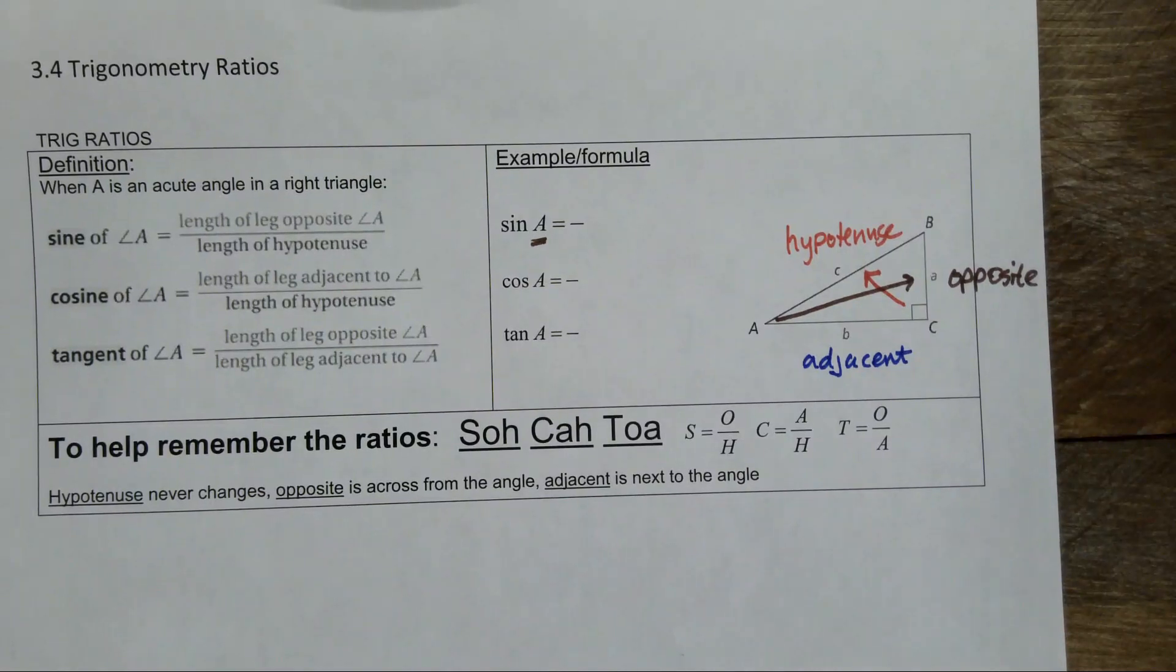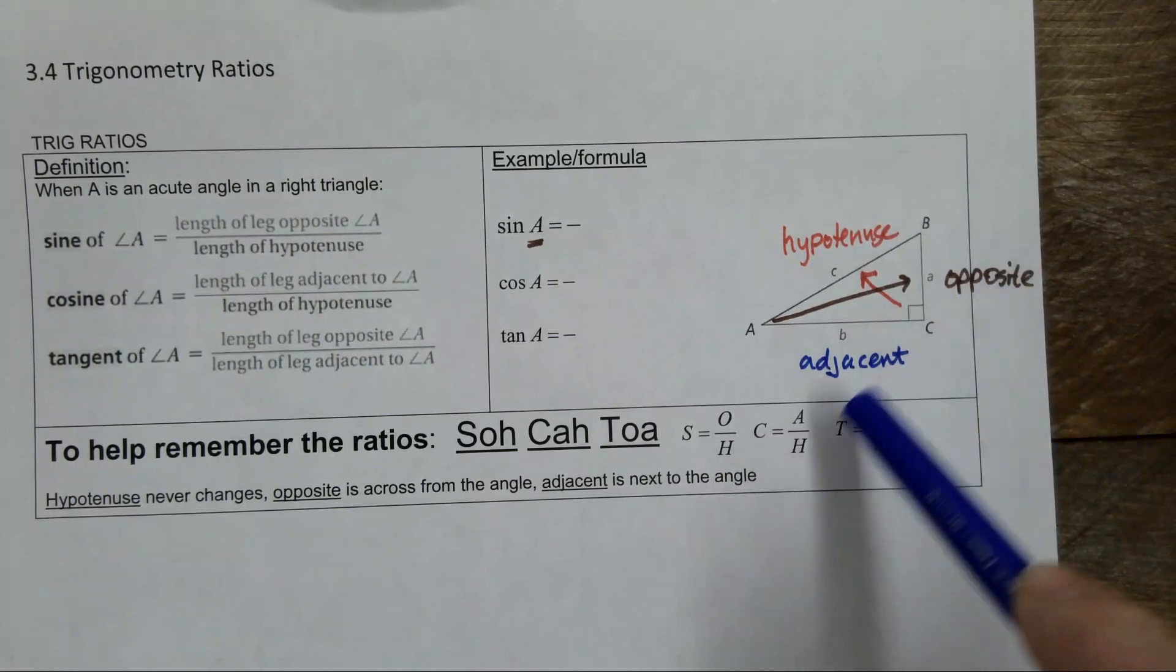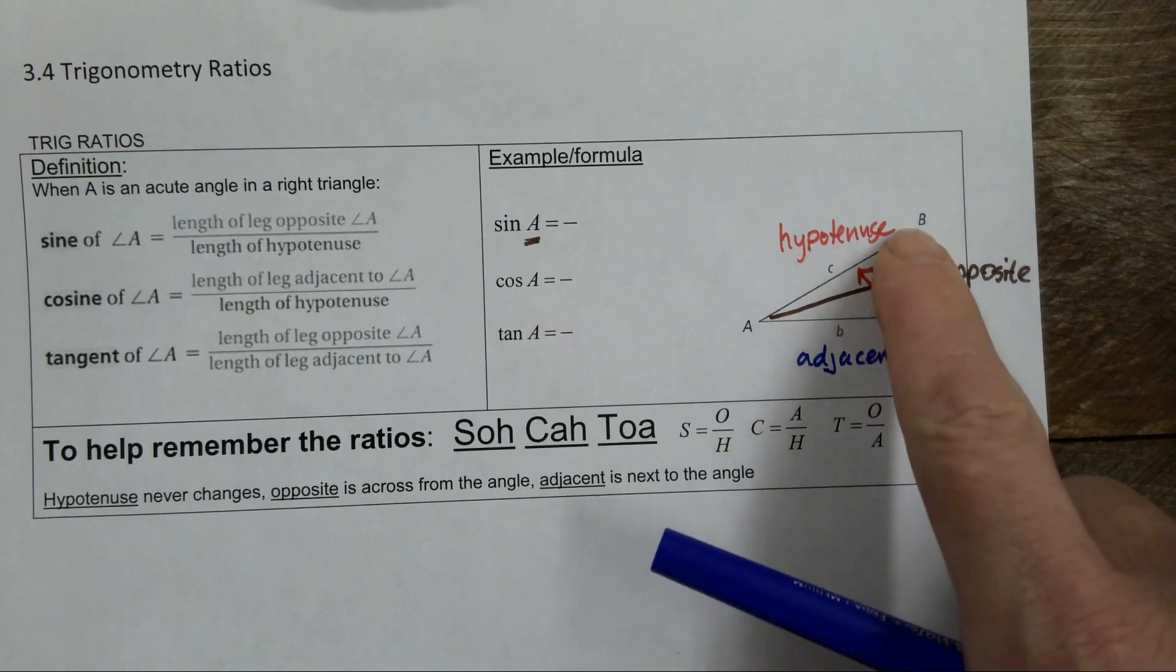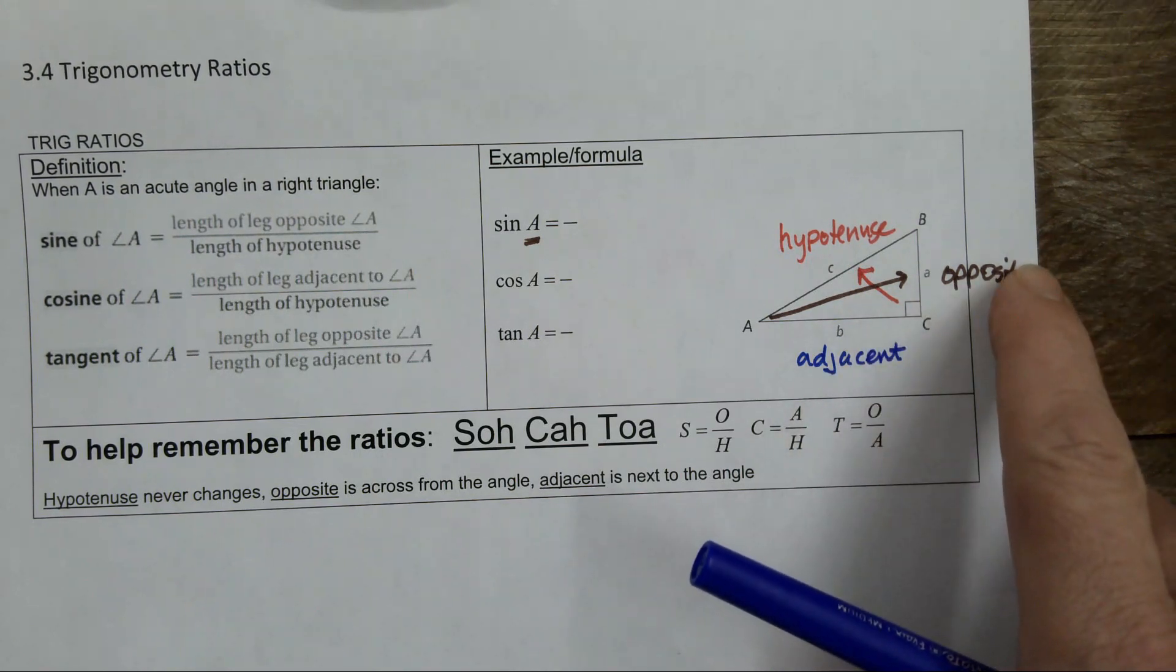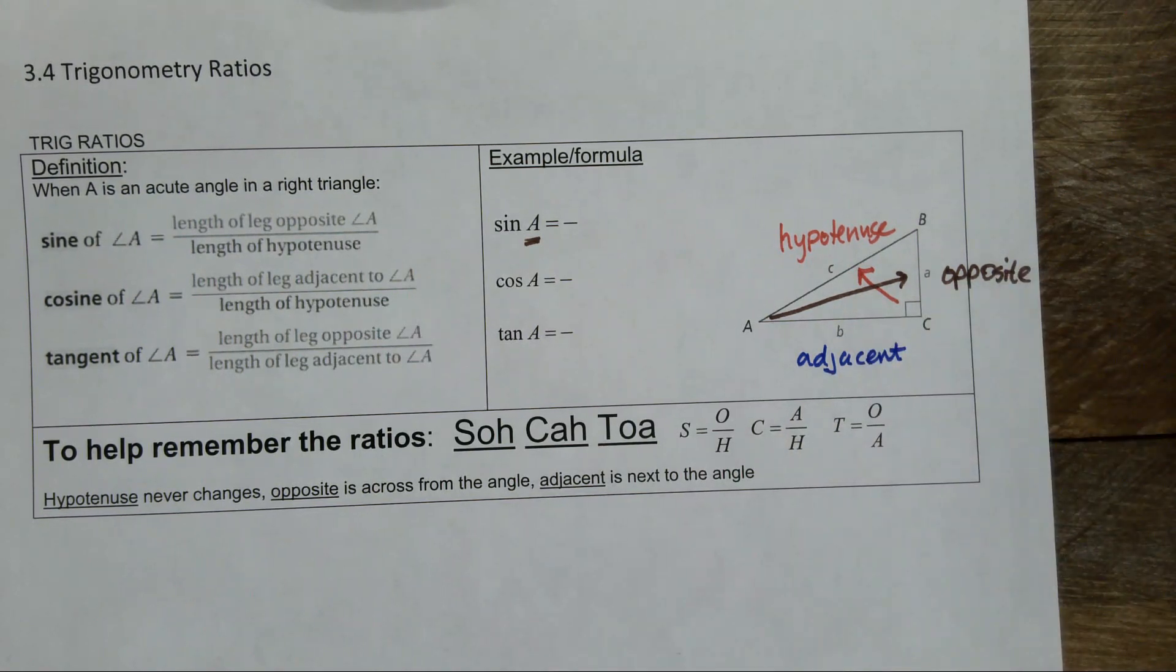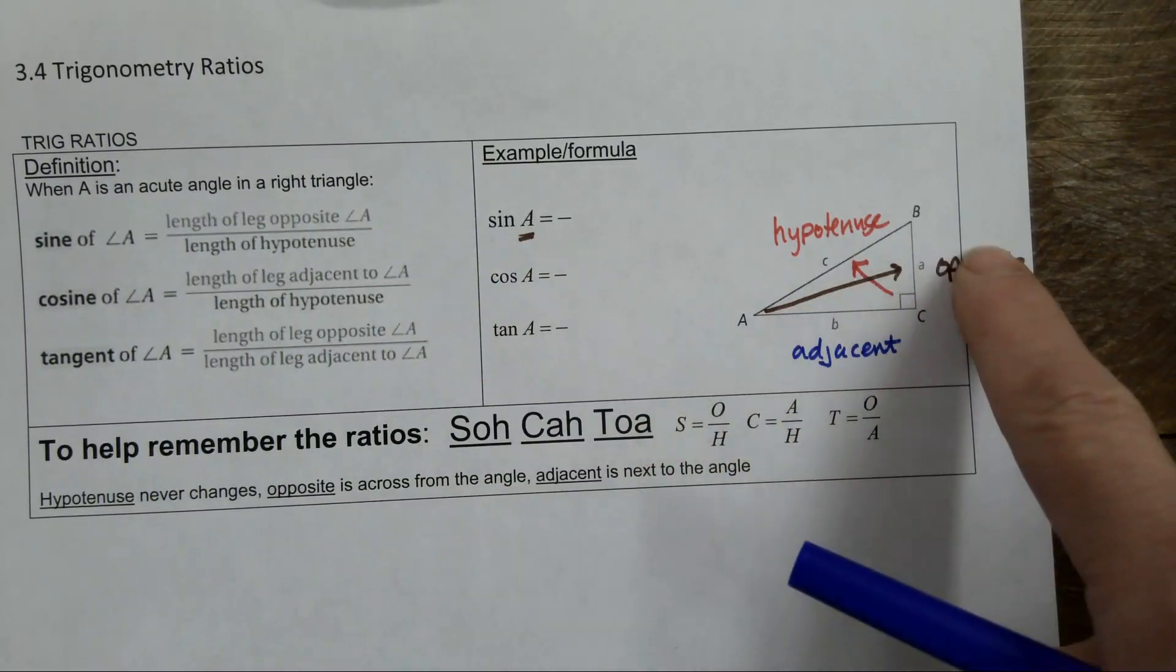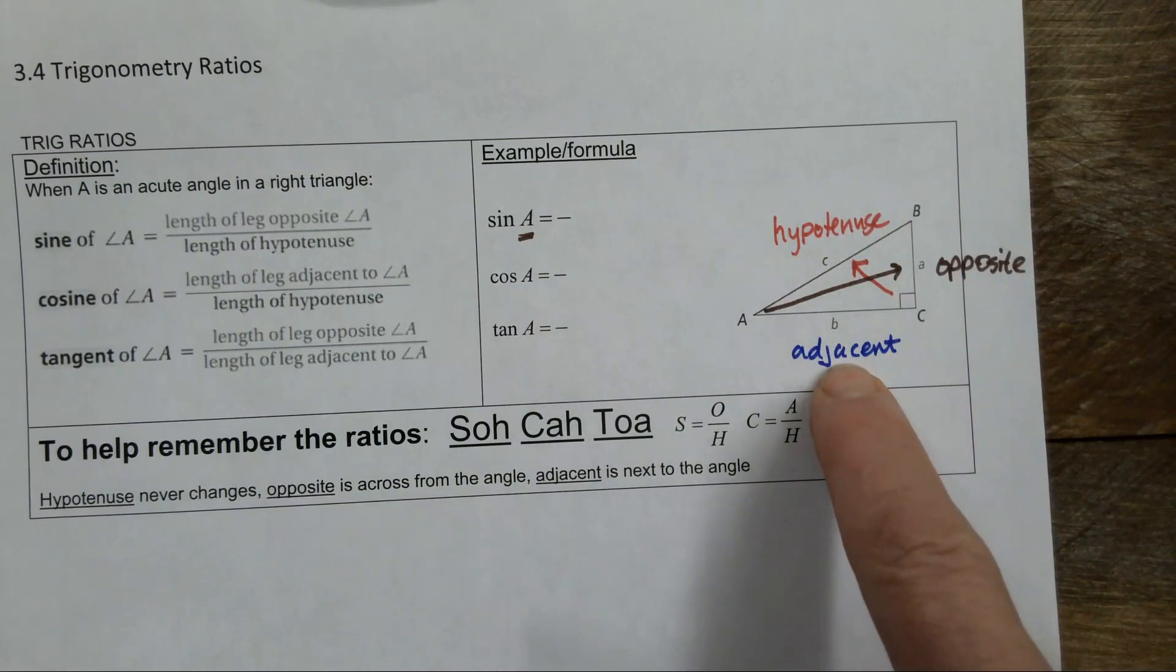Whatever's left is the adjacent. But what you have to remember is the adjacent and opposite can flip-flop depending on the angle. If I was interested in the sine of B, then B would be the opposite side and A would be the adjacent. You have to be aware of the angle that you're looking at. Opposite of A, hypotenuse is the longest, the remaining side is the adjacent side.